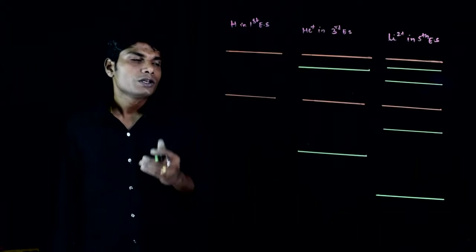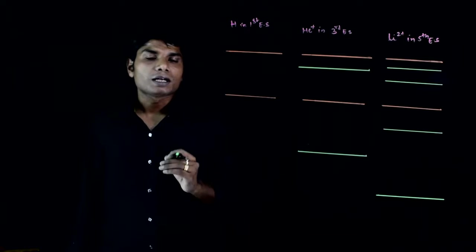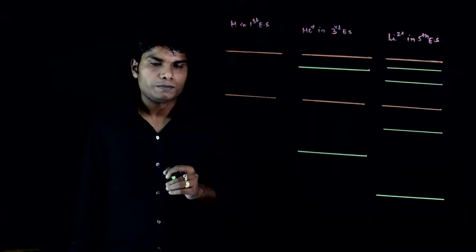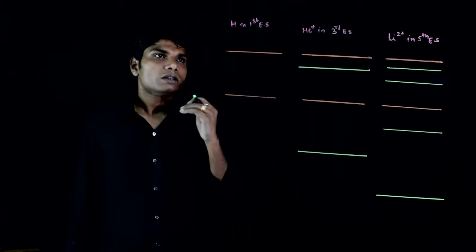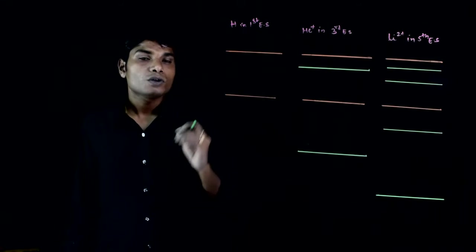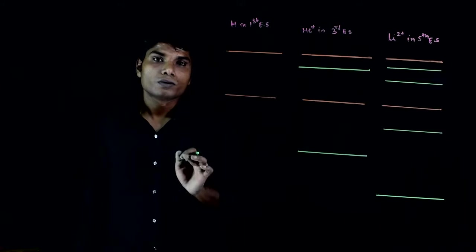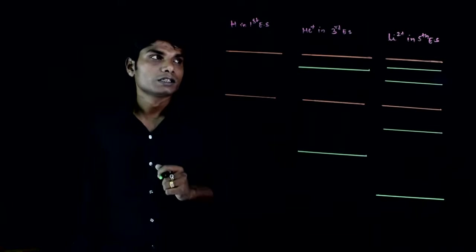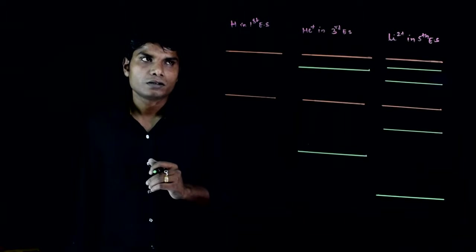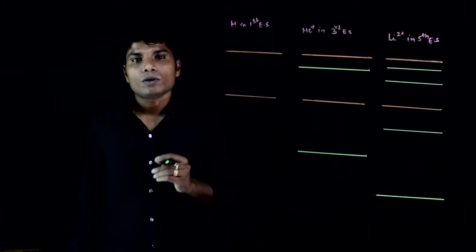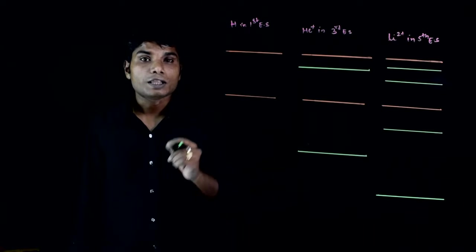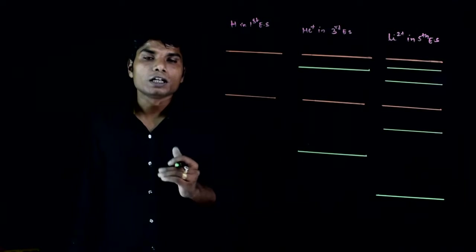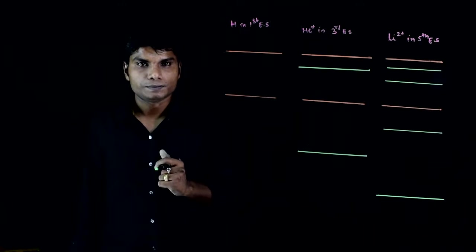Welcome back. This question involves a container — let's say a glass bottle — containing three species. That sample contains hydrogen in the first excited state, helium plus in the third excited state, and lithium 2 plus in the fifth excited state. The question asks for the total number of lines that will be emitted from the sample — i.e., combining all three, what is the total number of emission lines?